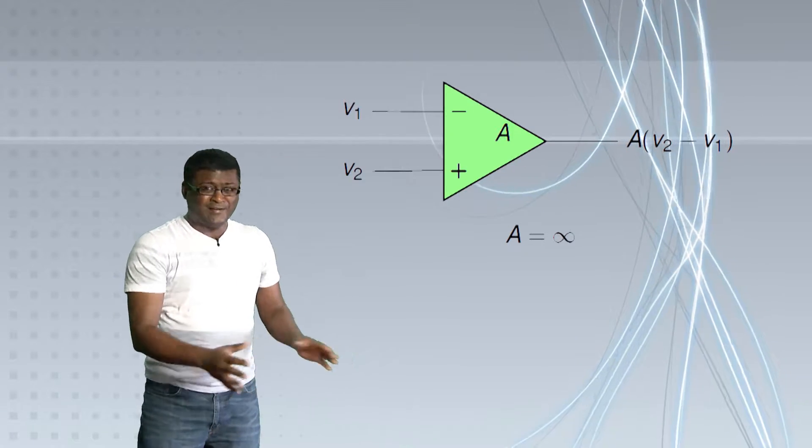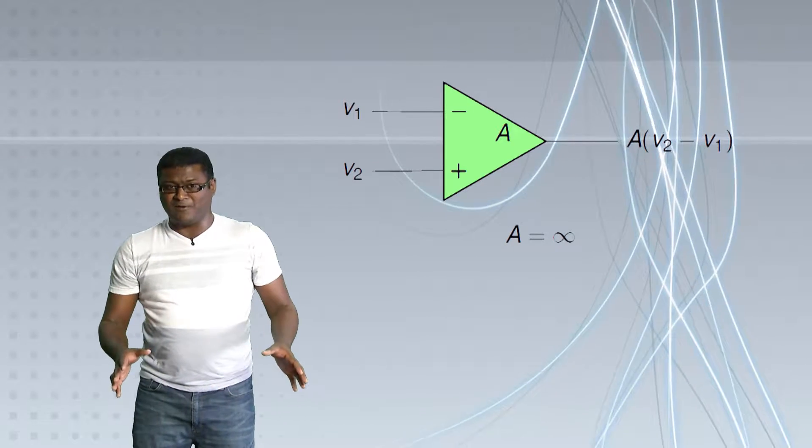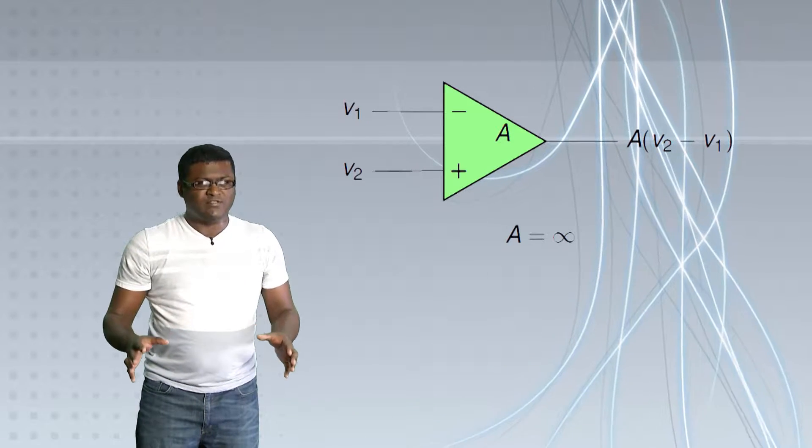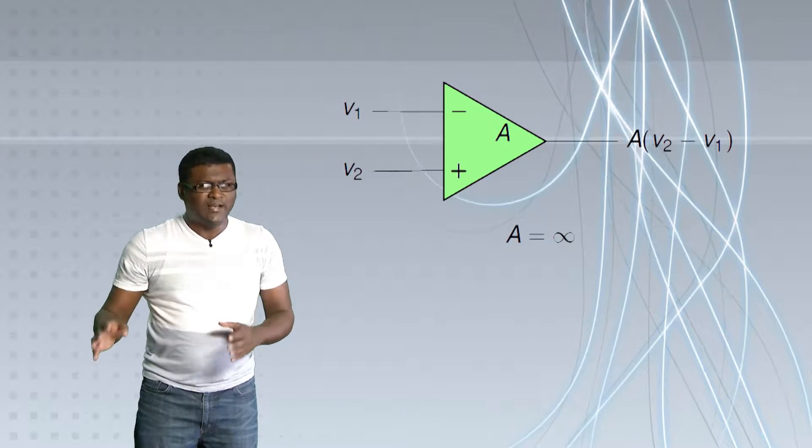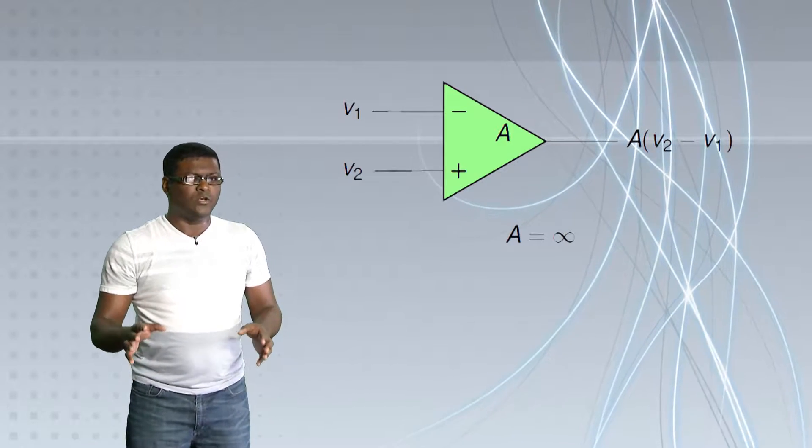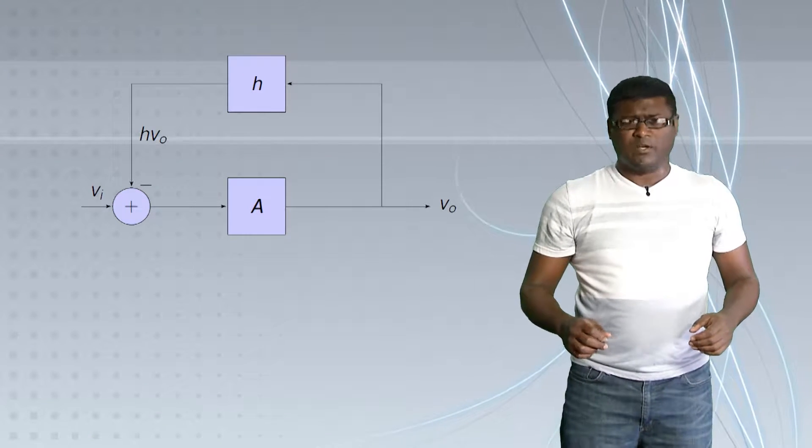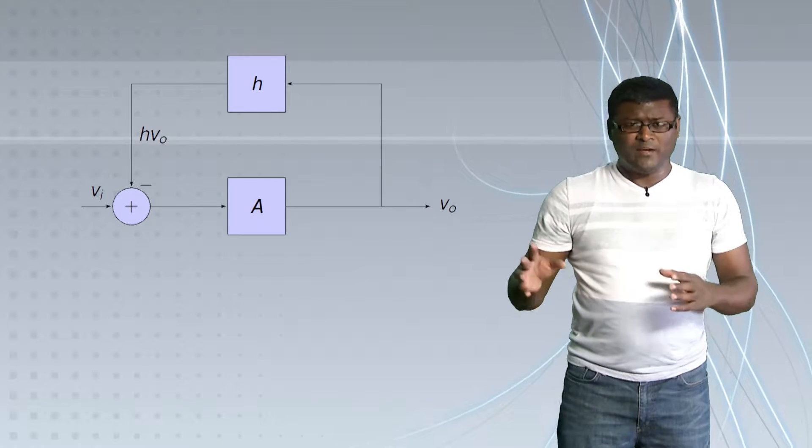So let's put the practicality aside for now and just talk theoretically. Now, if you do have an infinite gain, what we will see is you can use negative feedback to get whatever gain you need. Let's consider this diagram here. So here, I'm taking the output, multiplying it by another constant H,